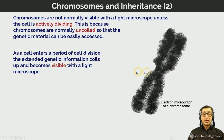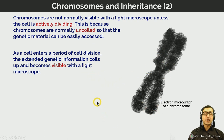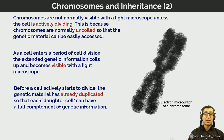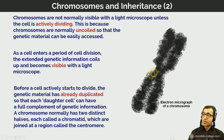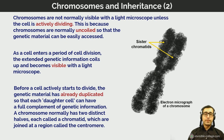As a cell enters a period of cell division, the extended genetic information in the DNA coils up into chromosomes, which then become visible with a light microscope using the correct stain. Before a cell actively starts to divide, the genetic material has already been copied so each daughter cell can receive a full complement. A chromosome normally has two distinct halves — each called a chromatid — joined at the center by a structure called a centromere.